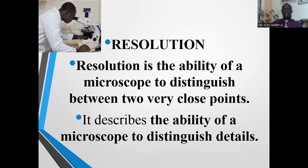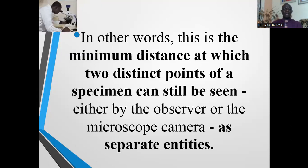Resolution describes the ability of a microscope to distinguish details. Even after magnification, the object or the organism should be very clear, and the organelles of the organism should be clearly seen. In other words, resolution is the minimum distance at which two distinct points of a specimen can still be seen as separate entities.